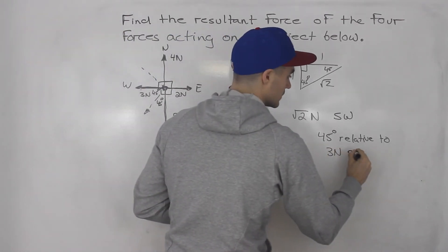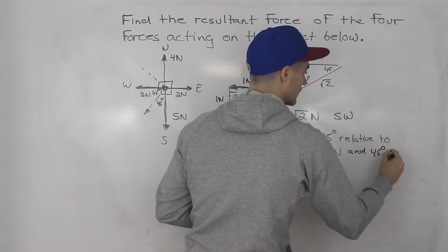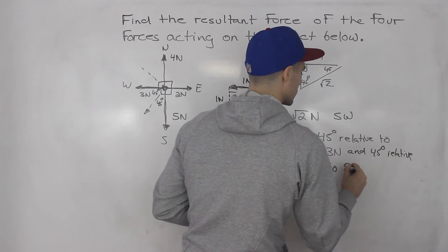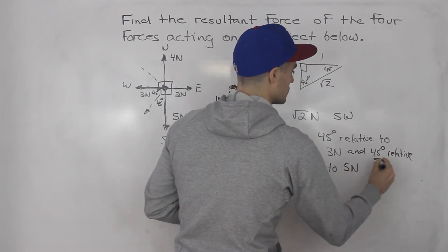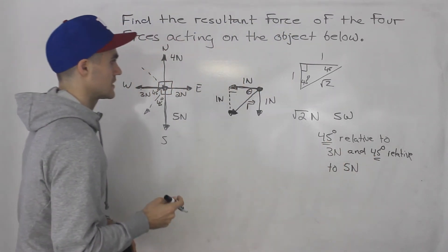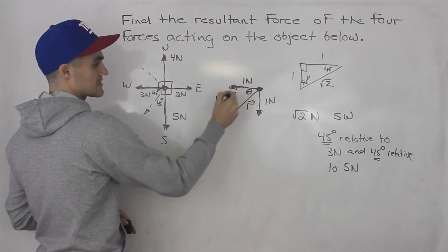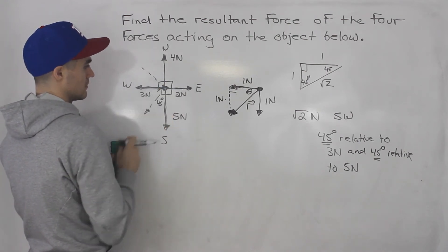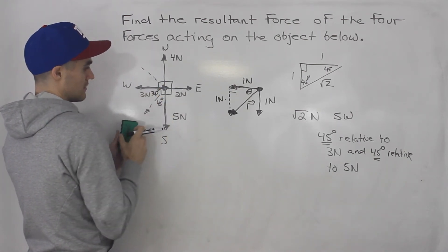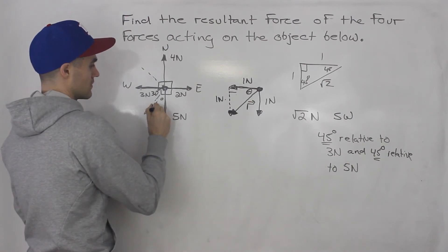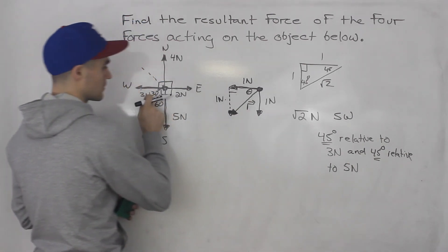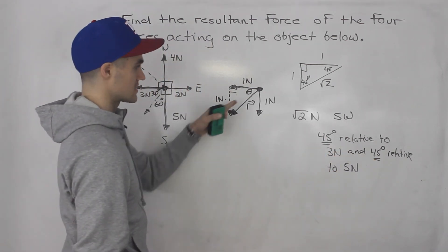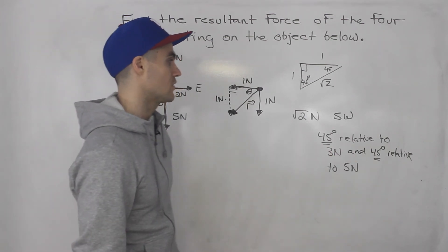So we would say 45 degrees relative to five newtons. And these two are the same by coincidence, just because this is an isosceles triangle. But like, let's say this was 30 here. Then this here would be 60. And then we would say 30 degrees relative to three newtons, and then 60 degrees relative to five newtons. But since it's split right in half, it's 45 and 45.